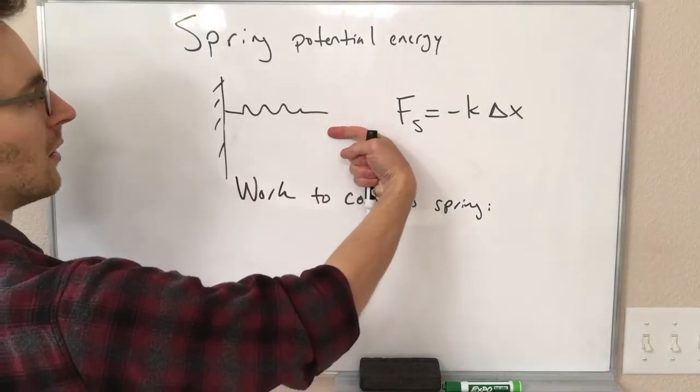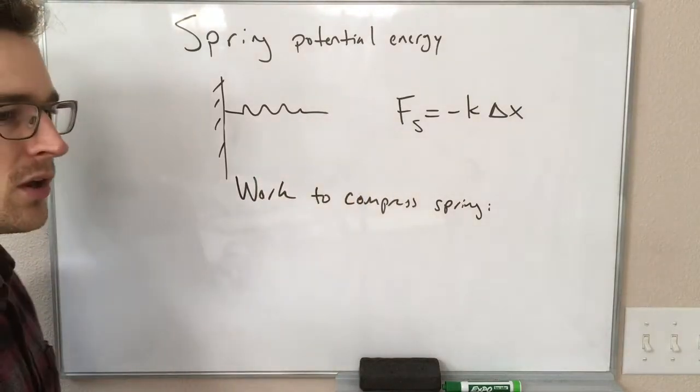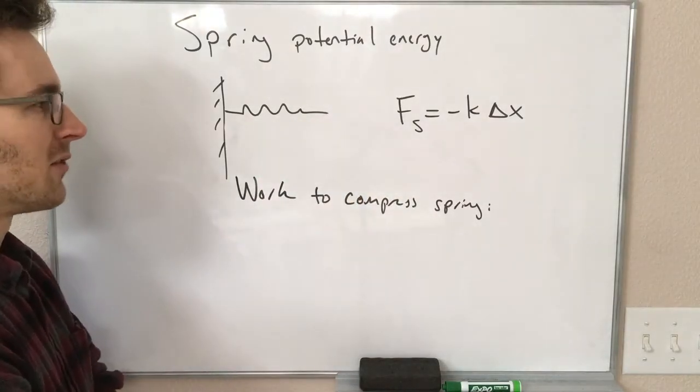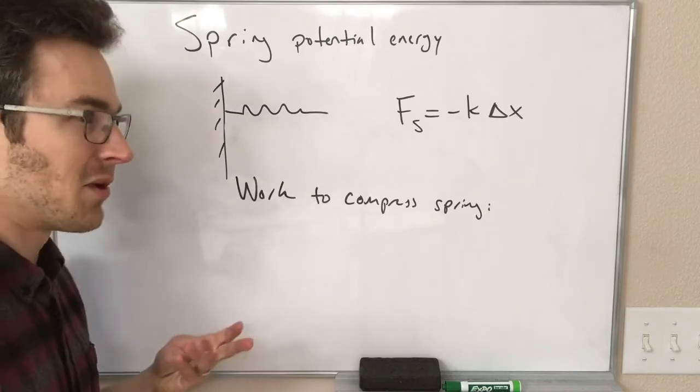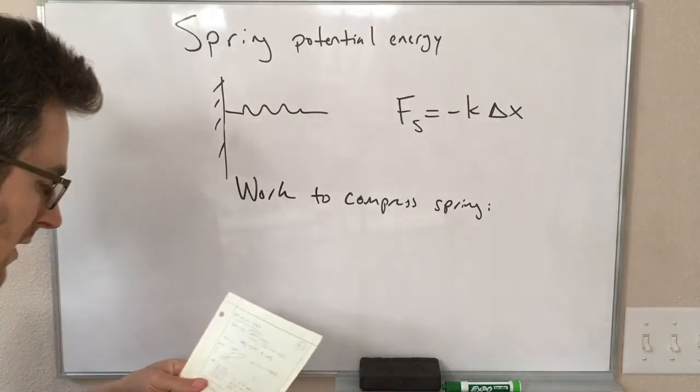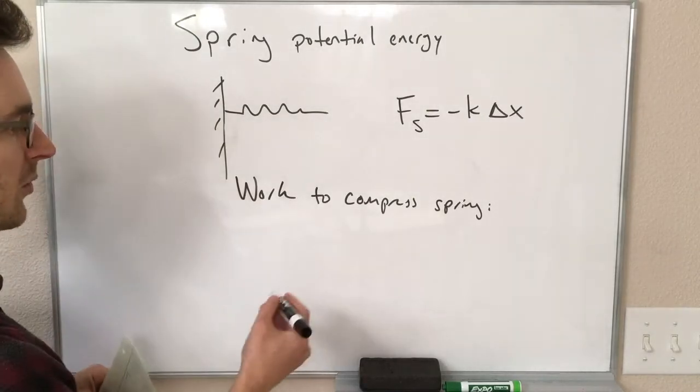So if I start with this here at the equilibrium length and I compress it some distance delta x, some of the time my force is zero, some of the time my force is this maximum, most of the rest of the time my force is in between those two. What if we use the average force to figure out what the work is?